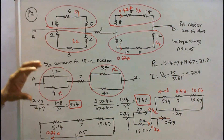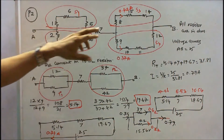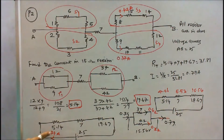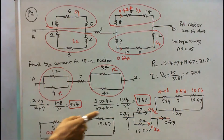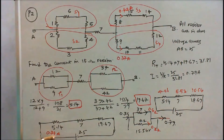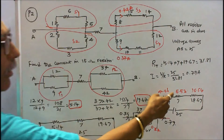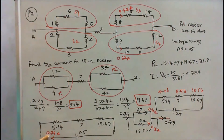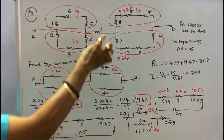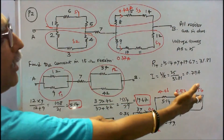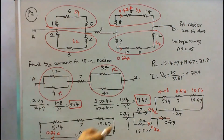Now I find the voltage drop across each part to determine the current through the 15Ω resistor. Using V = I×R: 0.79 × 5.14 = 4.06V, 0.79 × 7 = 5.53V, and 0.79 × 19.67 = 15.54V. The voltage across the parallel combination of 37Ω and 42Ω is 15.54V.